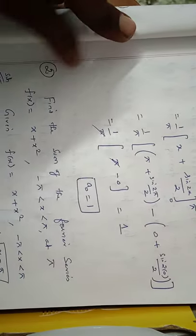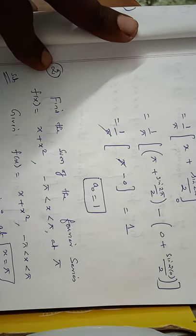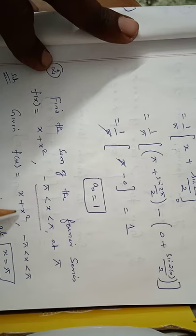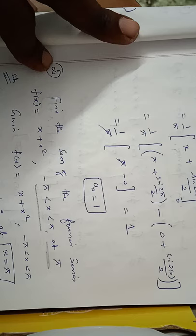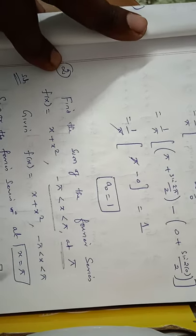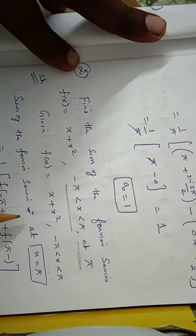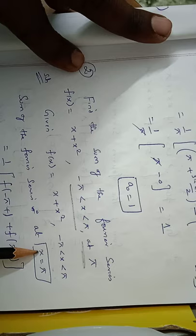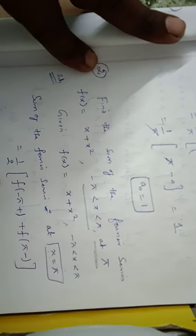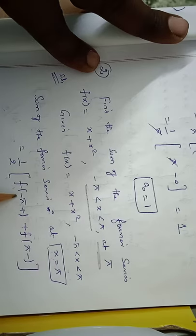Second problem: find the sum of the Fourier series of f(x) = x + x² on the interval minus π to plus π at x = π. Given f(x) = x + x² on the interval from minus π to plus π, the sum of the Fourier series at x = π is given by the formula (1/2)[f(π⁻) + f(π⁺)].